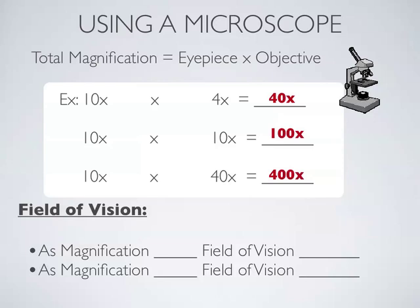Our eyepiece will all say 10x somewhere. And when you look at those individual objectives, they'll say 4x, 10x, 40x. If you're using a different microscope, you may have some different powers. But you always multiply eyepiece times objective power to find the total magnification.